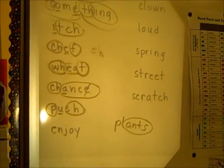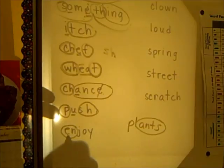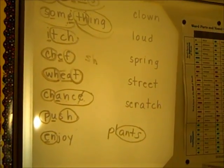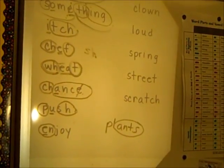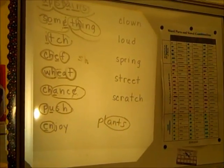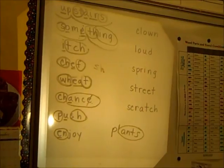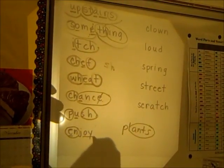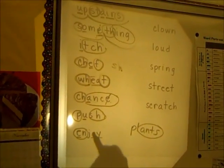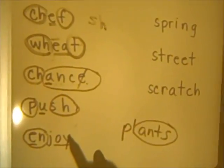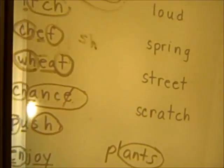Here's the word enjoy. Circle the E-N together and underline that E. E-N is a word beginning. N never stands alone — I always will have a vowel in front of it, so it's N. Does that E say its name? No, it doesn't. And then underline O-Y. That's the vowel team that says oy.